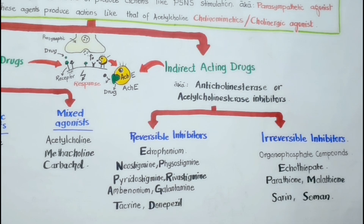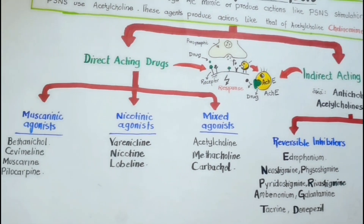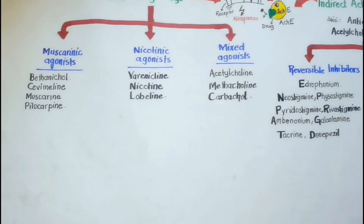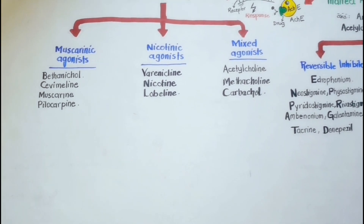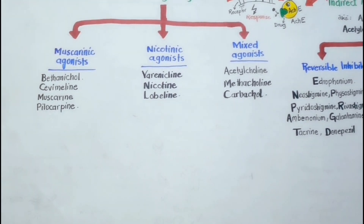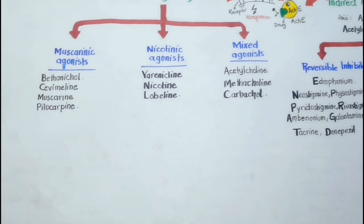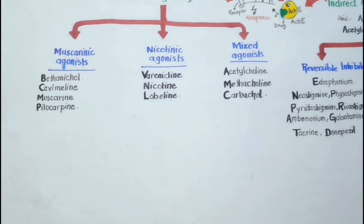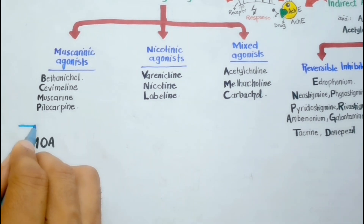Now let's move to the mechanism of action of parasympathomimetics. As we discussed, a parasympathomimetic agent may be a direct acting or indirect acting agent. Direct acting agents interact with cholinergic receptors, which include muscarinic and nicotinic receptors. First we will discuss about the muscarinic agonists.